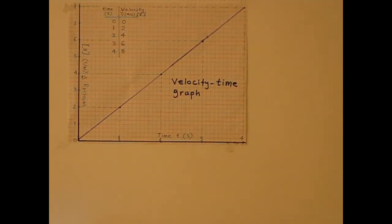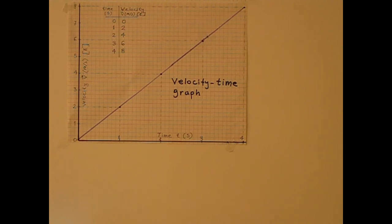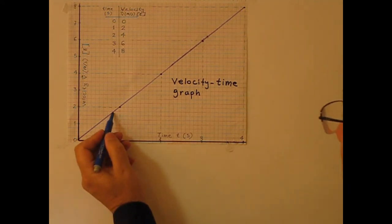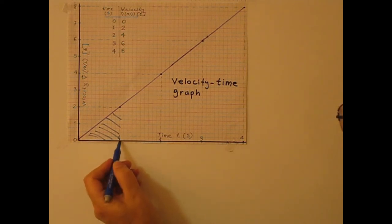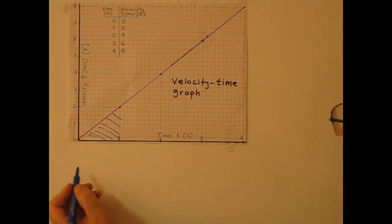From the velocity-time graph, how can we draw the position-time graph? In a velocity-time graph, the area under the line over a given interval gives the displacement, or change in position, for that interval. Let's find the area between zero and one seconds.